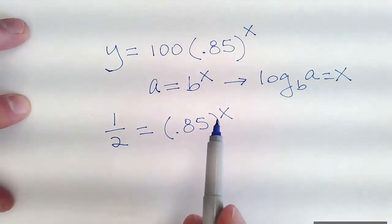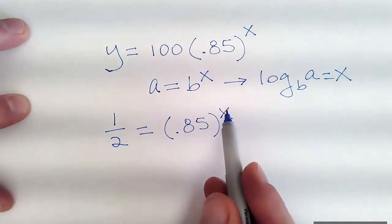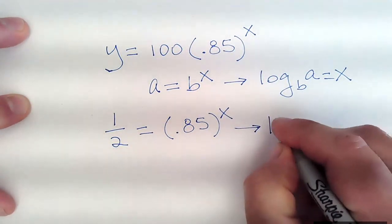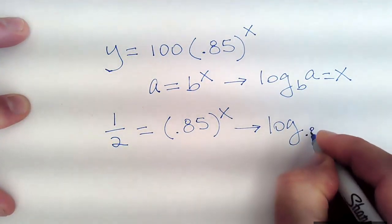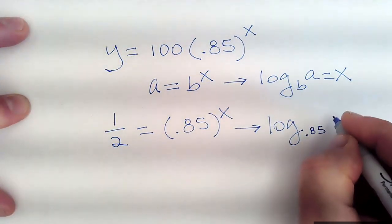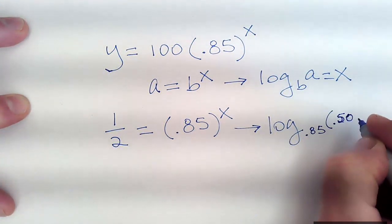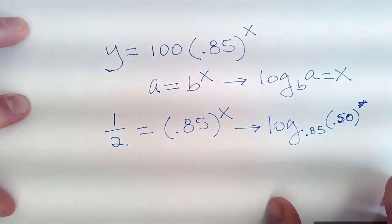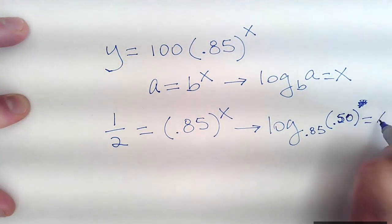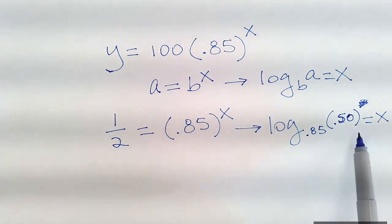Once it's in this format, I can convert it to log a equals b raised to some power x. So I write log. My base is 85 hundredths. My argument is one half. I'll convert that decimal. Sorry, one half. Ignore that. Trying to do this too quickly. Equals x.